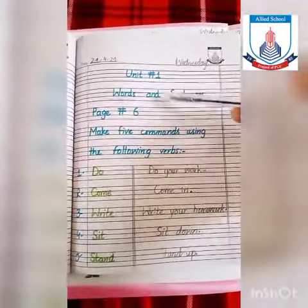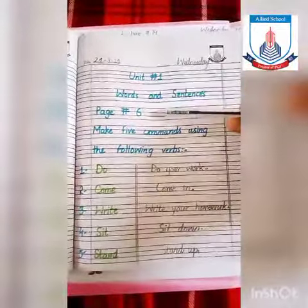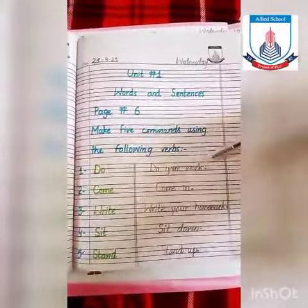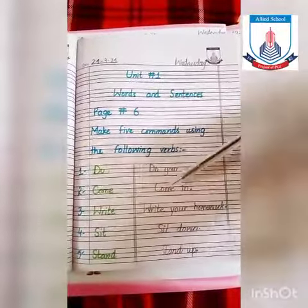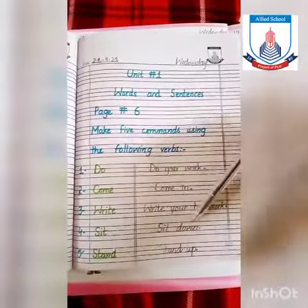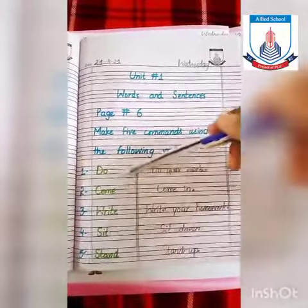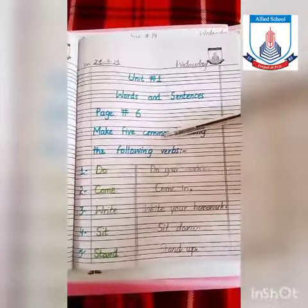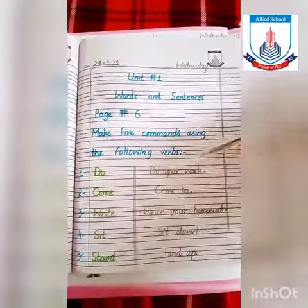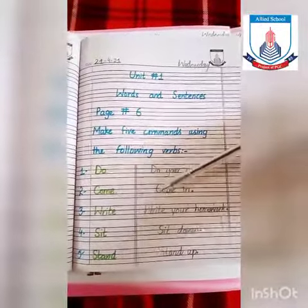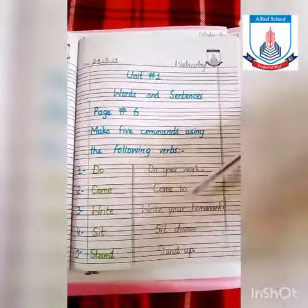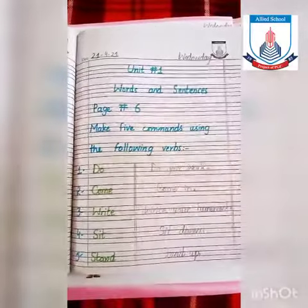Unit no.1, words and sentences, page no.6: Make five commands using the following verbs. Do — do your homework. Come — come in. Write — write your homework. Sit — sit down. Stand — stand up. یہ verb ہے اور ہم نے اس کے command بنائی ہے۔ Commands وہ ہوتے ہیں جن میں ہم کسی کو کچھ کرنے کو کہتے ہیں۔ یہ اپنی mini notebook پہ لکھنا ہے اور اسے اچھے طریقے سے یاد کرنا ہے۔